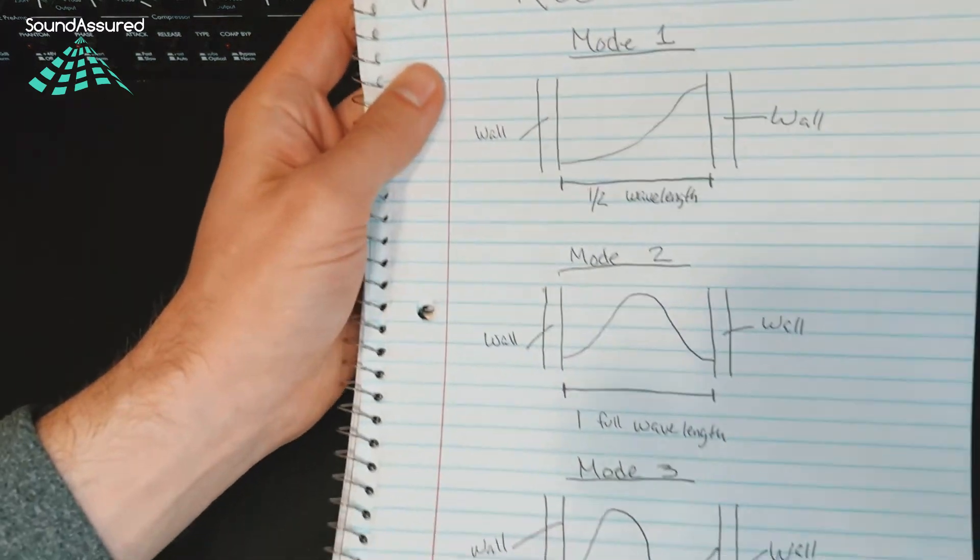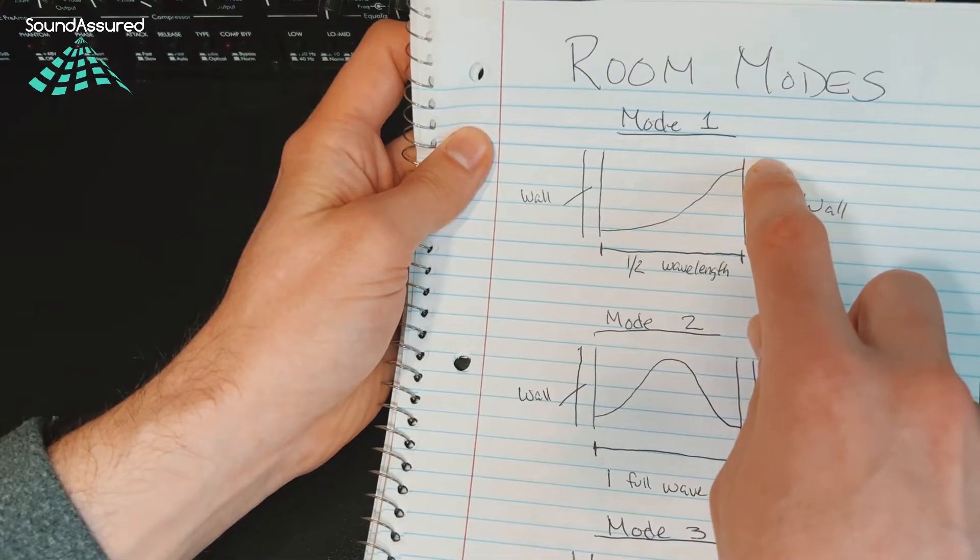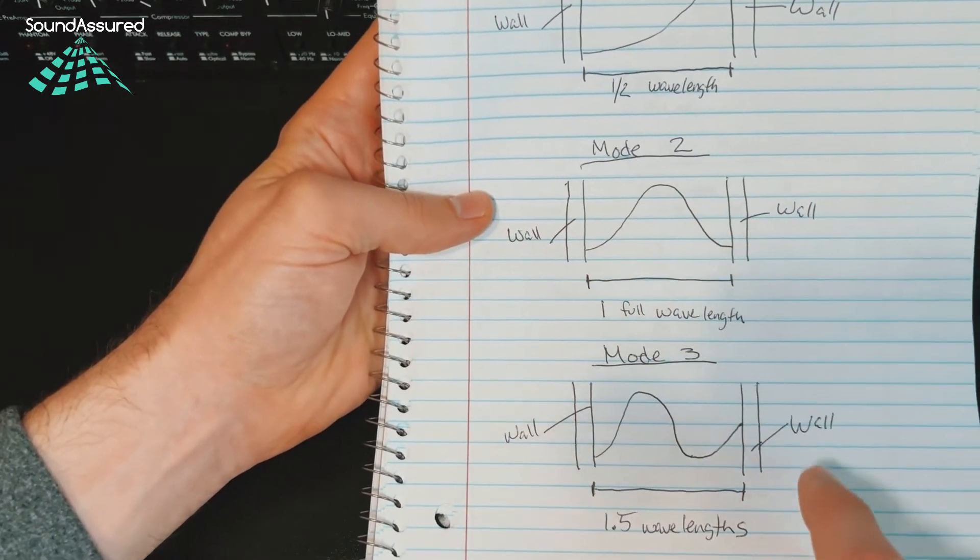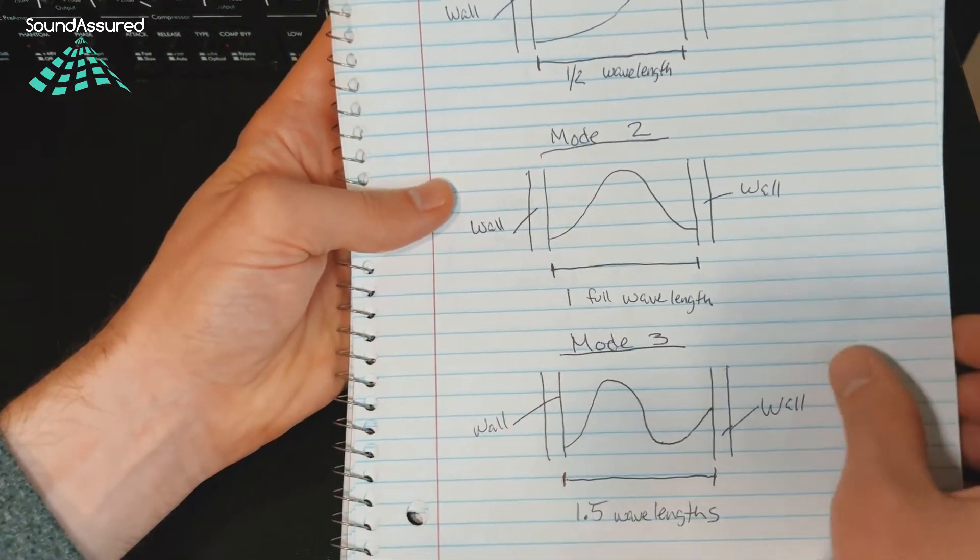Here's kind of a visual representation of the room modes. So here's the first mode, which is a half a wavelength, second mode, which is a full wavelength, and then the third mode, which is one and a half wavelengths.